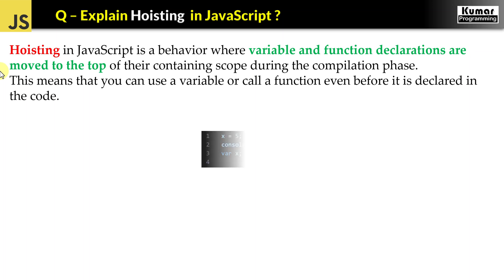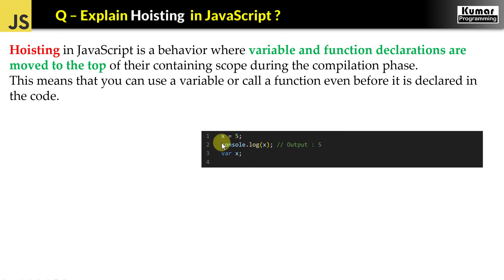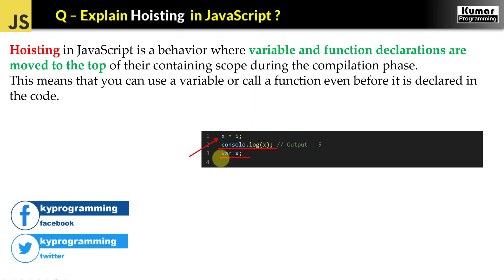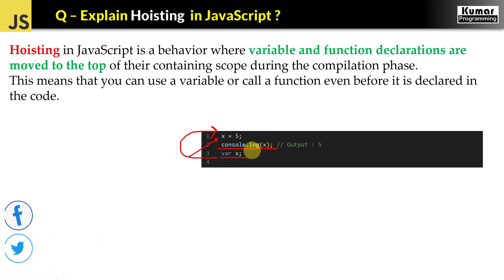We all know that JavaScript is an interpreted language — it executes line by line. But here, if you see, I have assigned a value 5 to variable x and I am using this variable before declaring it. Then after that I am declaring variable x. But still this is valid code in JavaScript. Why? Because once the JavaScript compiler is compiling the code, it moves the declaration to the top automatically. So in the compiled code, the declaration always goes to the top before execution starts.